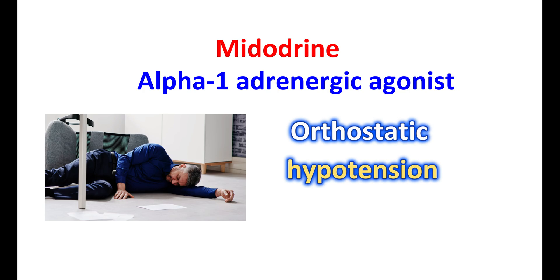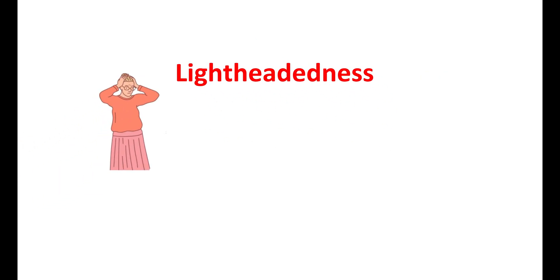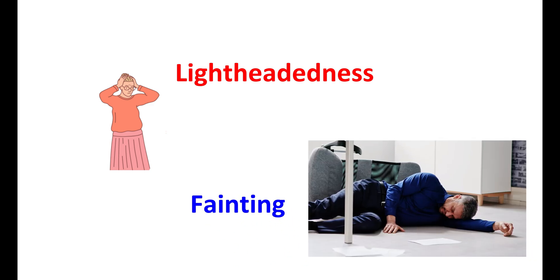Orthostatic hypotension is a drop in blood pressure, particularly when you stand up from a sitting or lying position. It is also called postural hypotension, as the drop in blood pressure can be observed when you change your posture. People may have lightheadedness, dizziness, blurred vision, weakness, and it can also result in fainting.